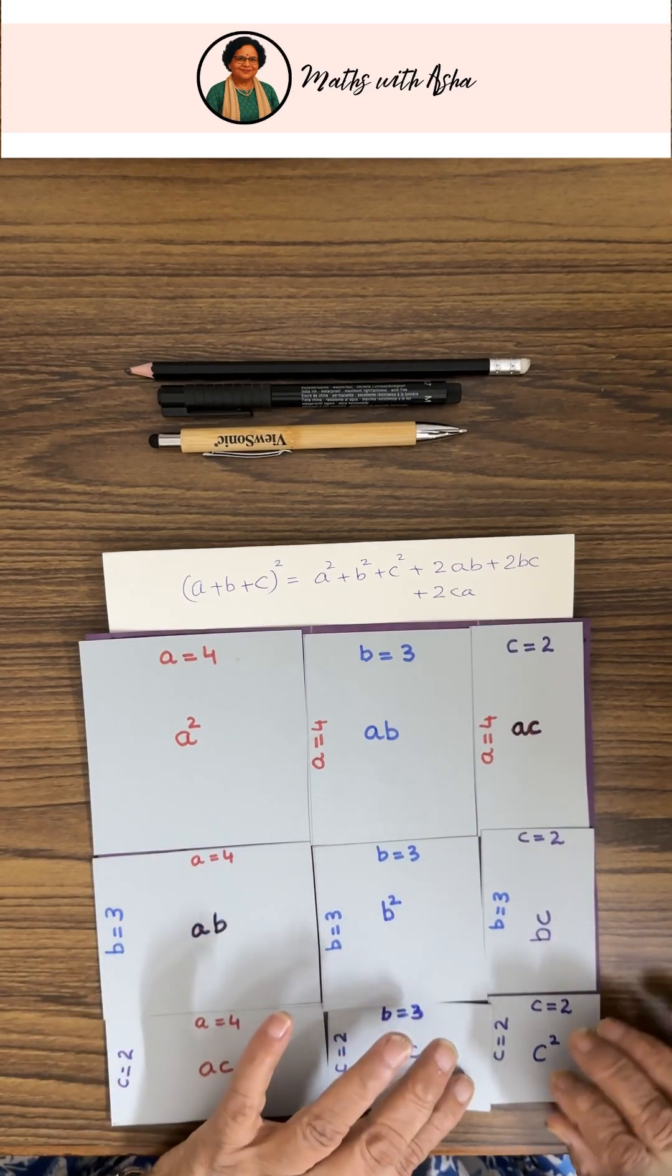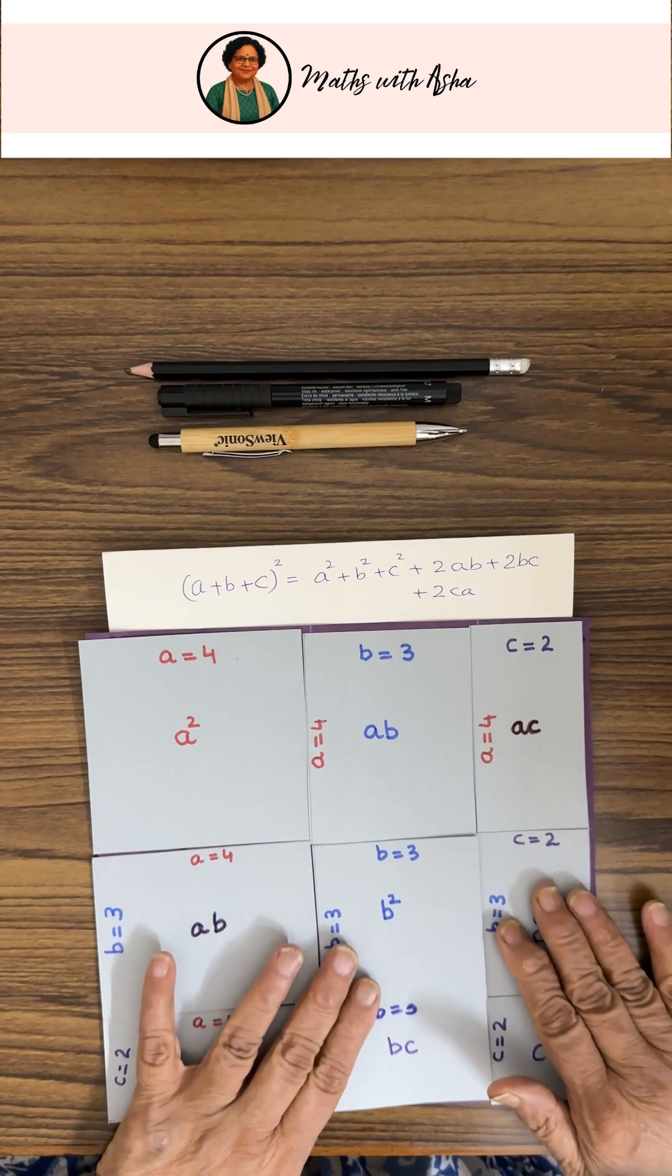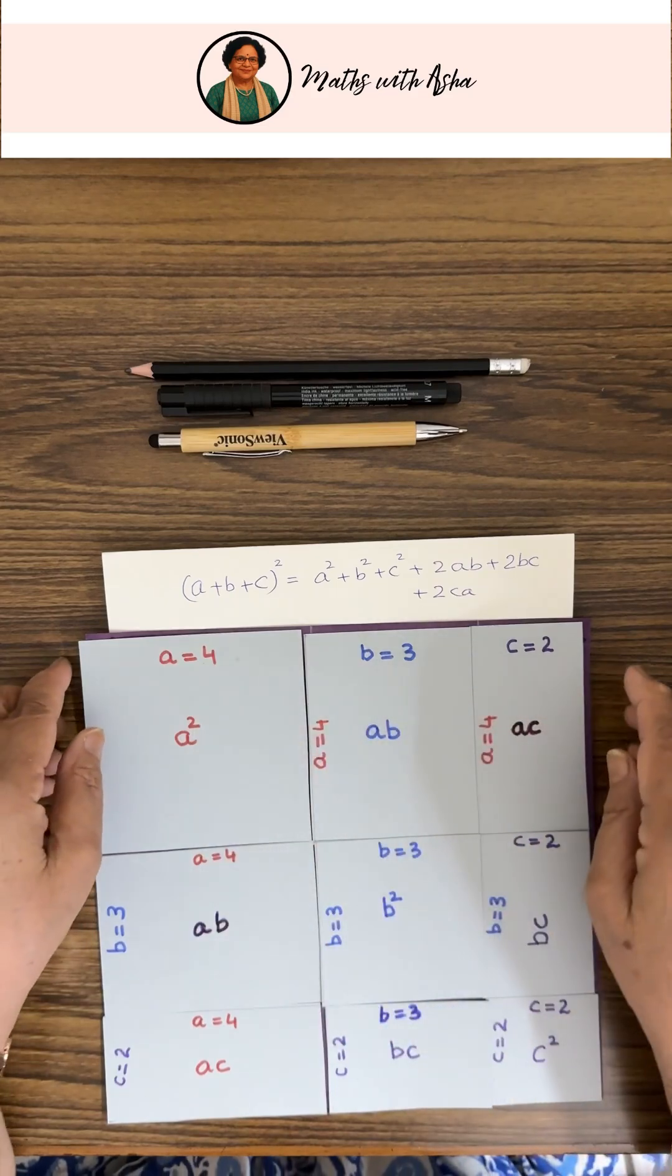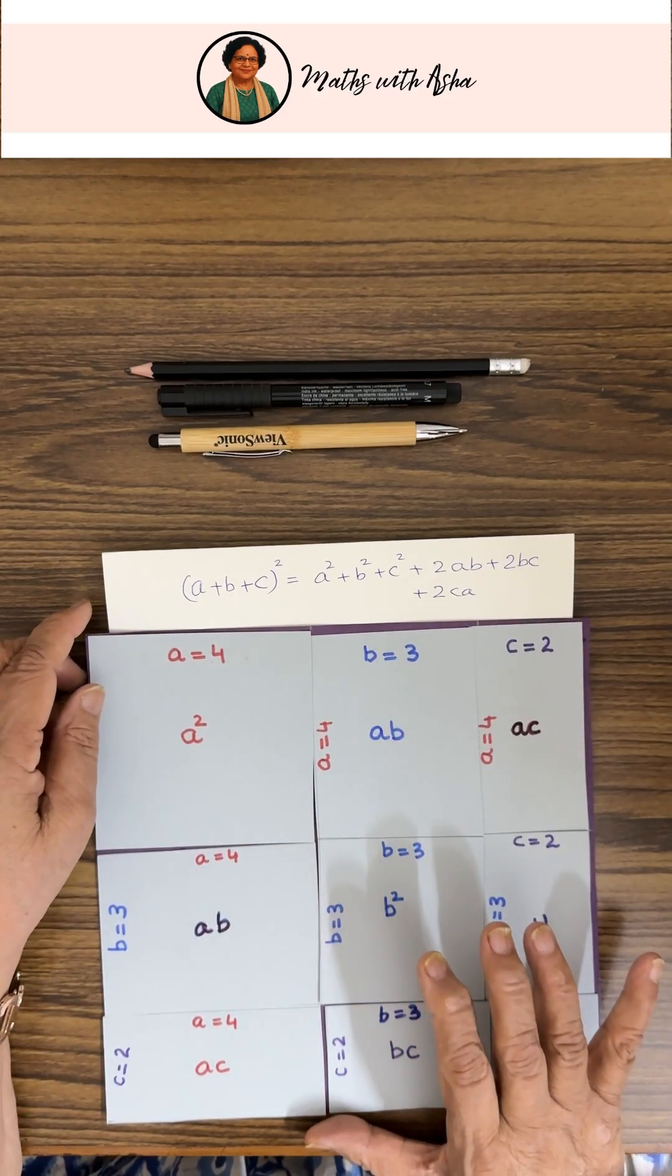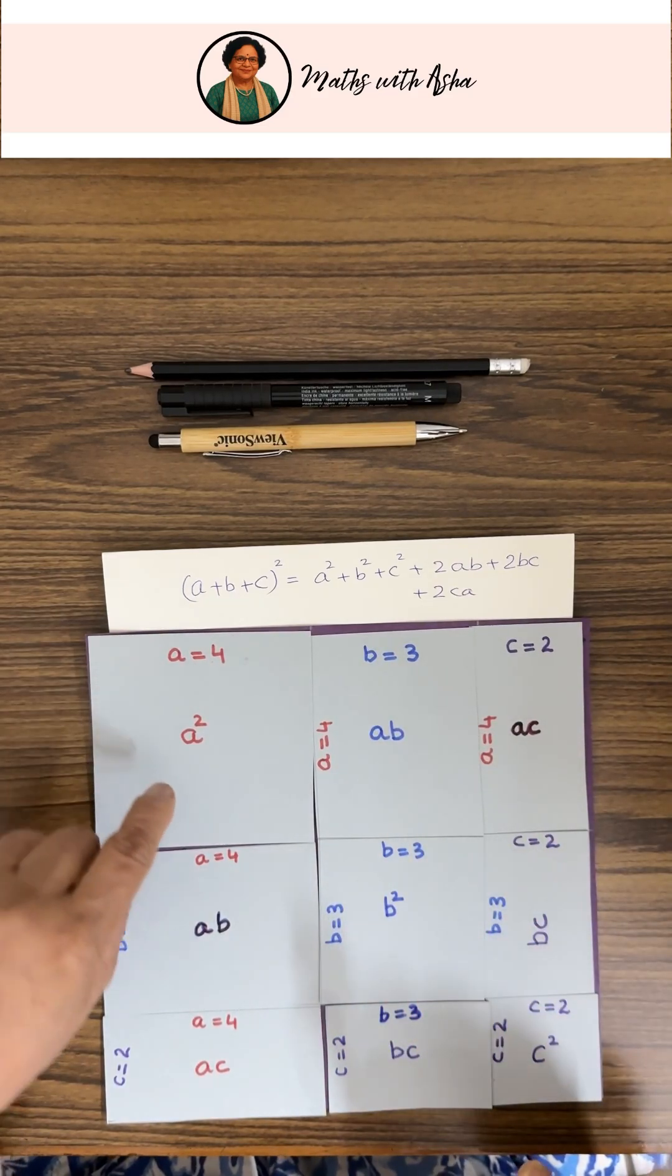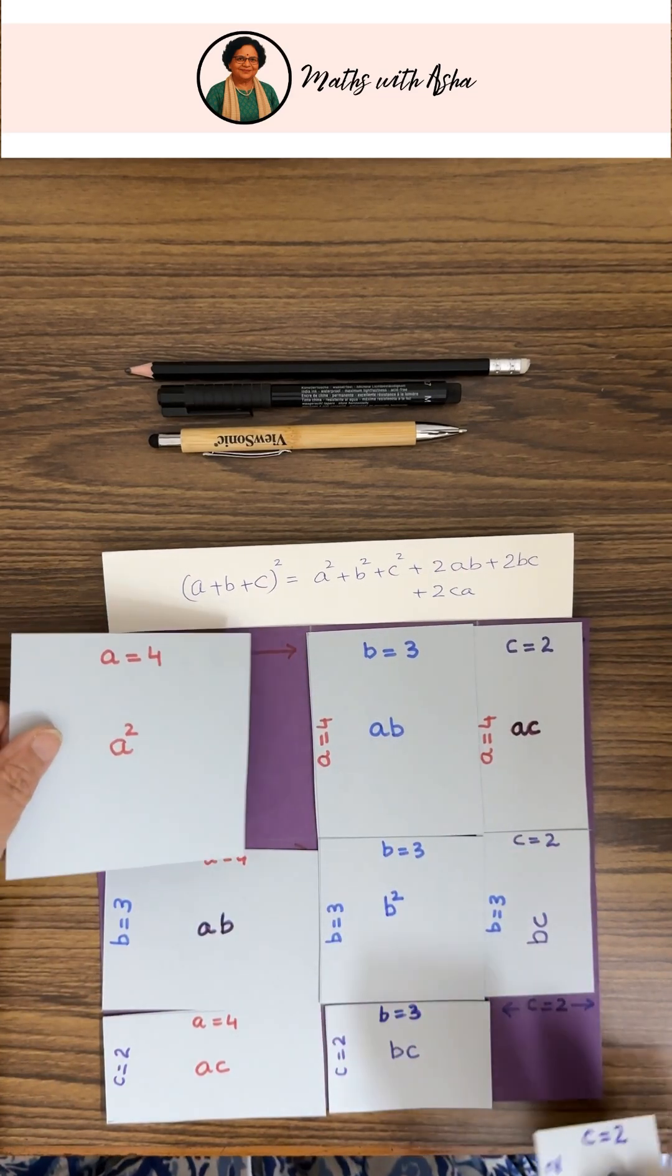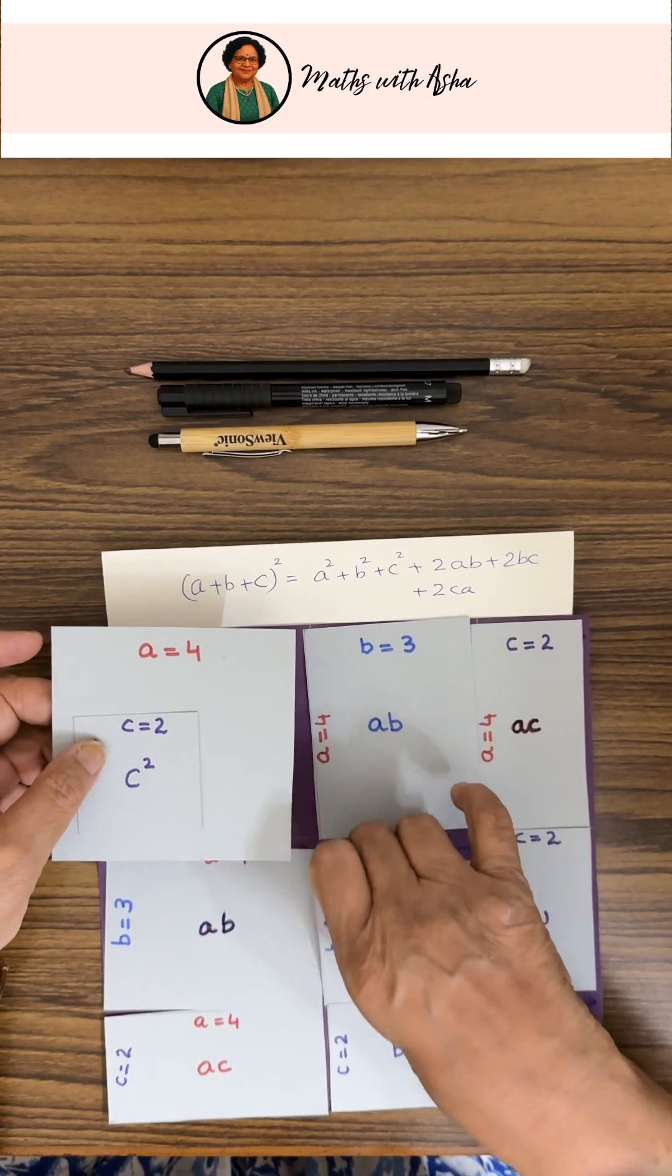So we can see here that we have fit all these pieces on the square with side a + b + c. And what are they? a² + b² + c² - these three.